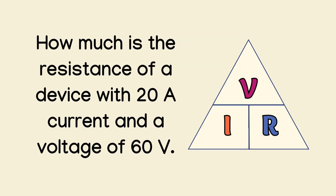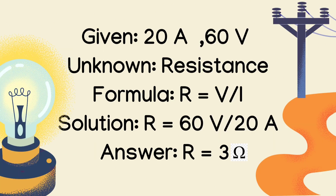Another problem: how much is the resistance of a device with 20 amperes of current and a voltage of 60 volts? The given values are 20 amperes and 60 volts; unknown is resistance. The formula is R = V / I. So R = 60 volts / 20 amperes. The correct answer is 3 ohms.